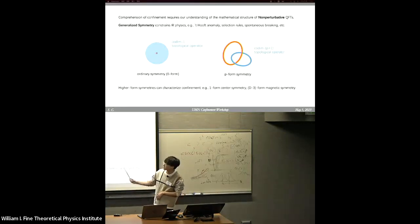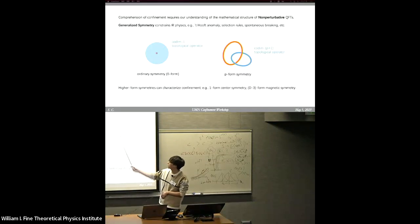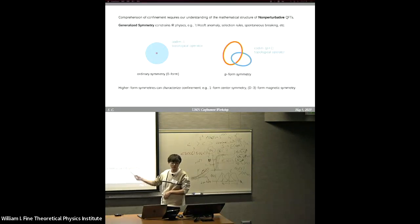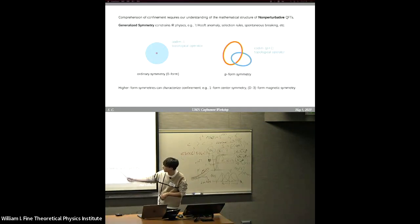In this case, generalized symmetry provides us a very important tool to understand the infrared physics. For example, we can look at the selection rules predicted by generalized symmetry and also consider its spontaneous breaking. All of these constrain infrared physics. So in that sense, generalized symmetry is also important for non-perturbative phenomena, including confinement.